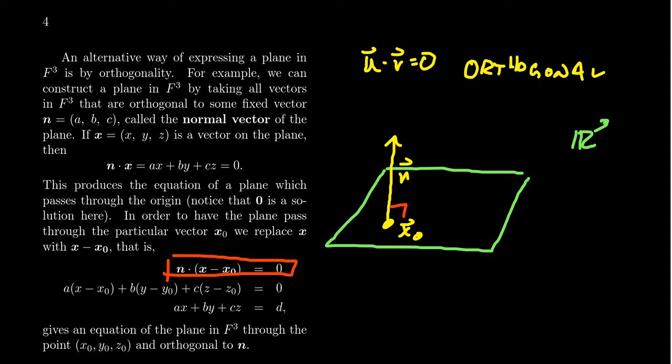Then we get this equation right here. This is the so-called point-normal form of the plane, the point-normal form. That's because it has built into it a point which is on the plane and the normal vector.